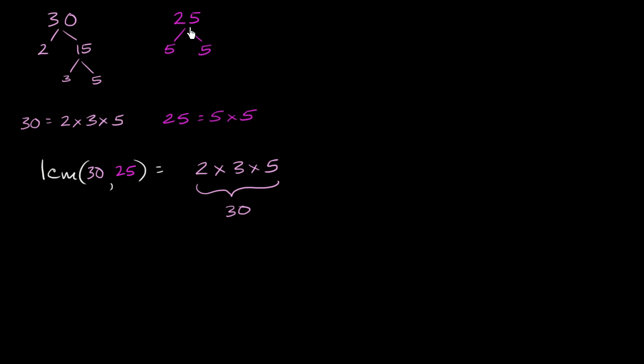But it needs to also be divisible by 25. In order to be divisible by 25, you need to have two 5s in your prime factorization. Right now, our prime factorization only has one 5. We have one 5 right over here, we need another 5. So let's throw another 5 right over here. Now this thing clearly has a 25 in it and is clearly divisible by 25.